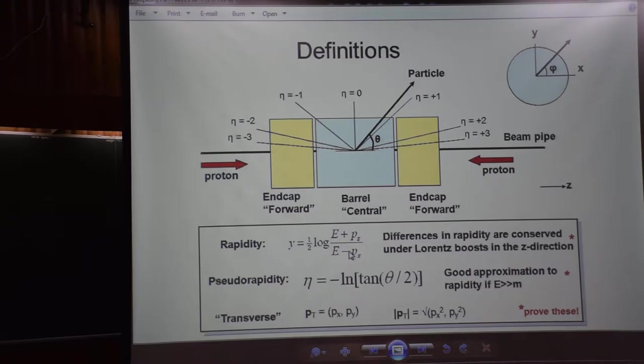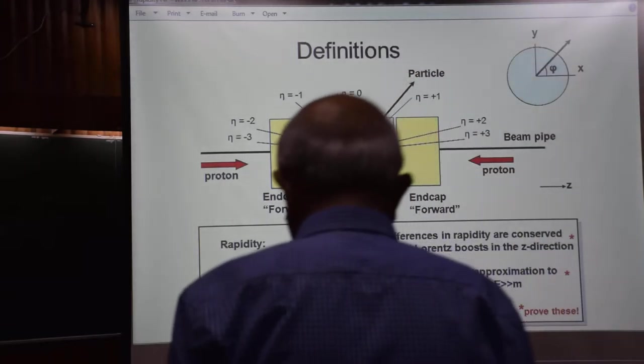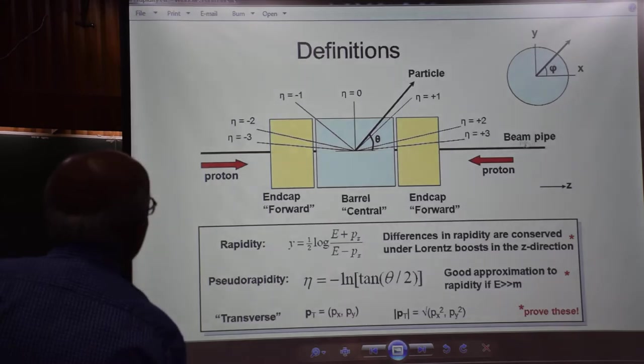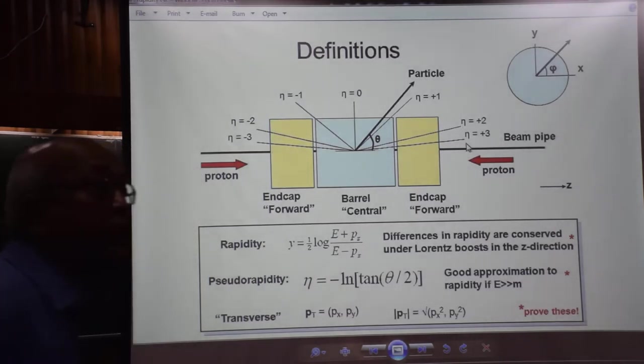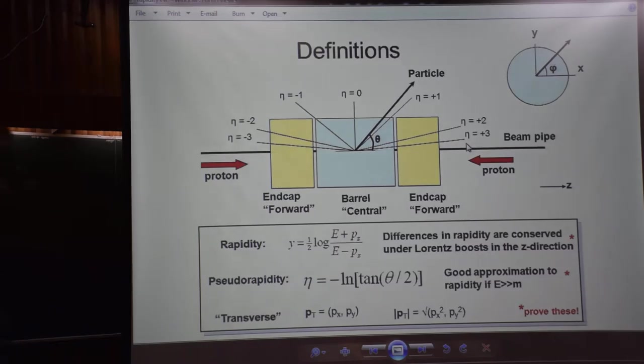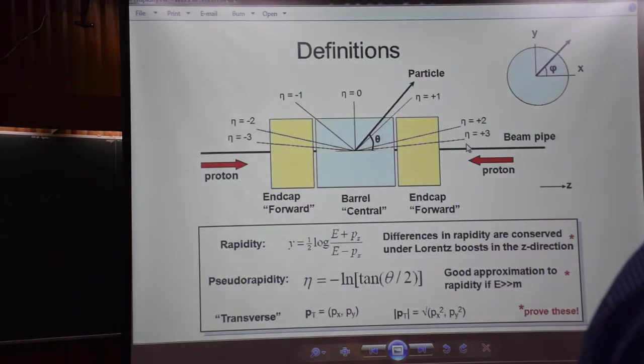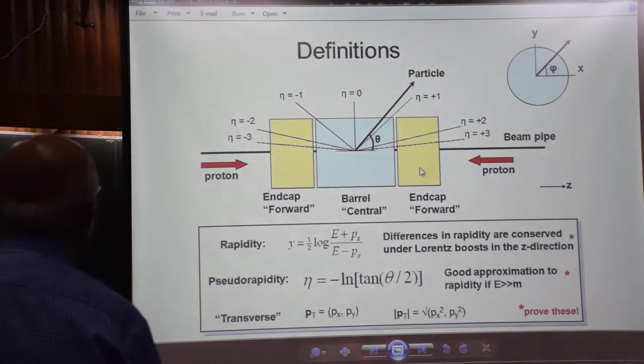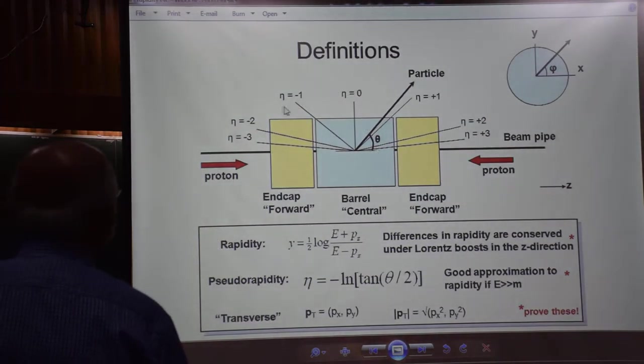See, the event will have, I am sorry, transverse momentum can never be equal to zero because of the beam pipe. You have a beam pipe here. So, your particle, when it goes down the drain, I do not care about its rapidity. Whatever I can see has a rapidity. So, in the language of the experimentalists, this region where rapidity is fairly large is called the barrel or central region.